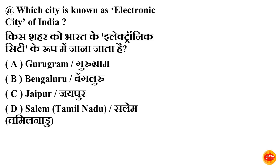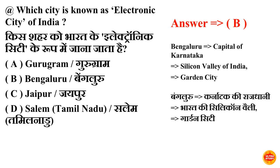Kis shahar ko Bharat ke Electronic City ke roop mein jana jata hai? Option B is correct — Bangalore. Bangalore ko Electronic City ke roop mein jana jata hai. Karnataka ka rajdhani hai Bangalore. Bangalore ko 'Silicon Valley of India' bhi kaha jata hai aur Bangalore ko 'Garden City' bhi kaha jata hai.